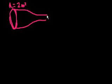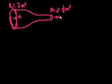And let's say it tapers off so that the area, the cross-sectional area at this end of the pipe, so area 2 is equal to half a square meter. And let's say we have some velocity at this point in the pipe, which is v1, and then the velocity exiting the pipe is v2.